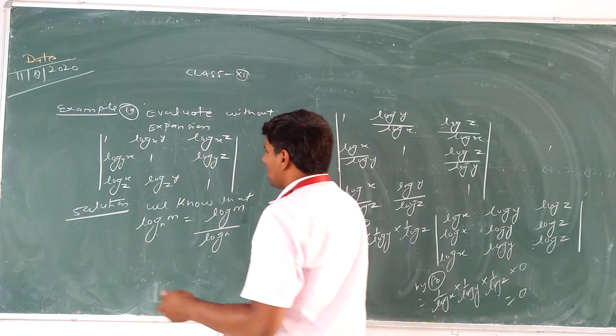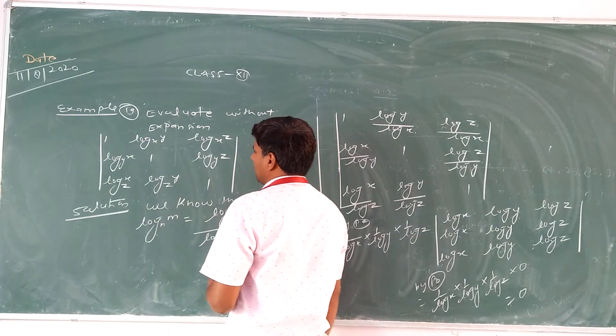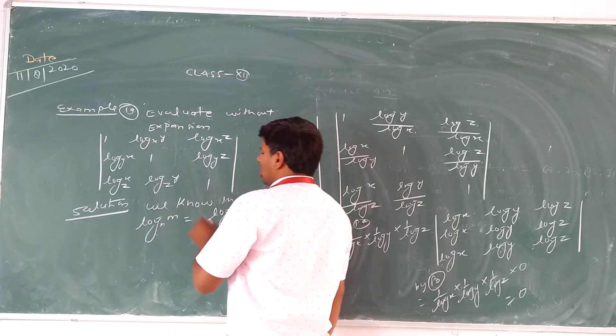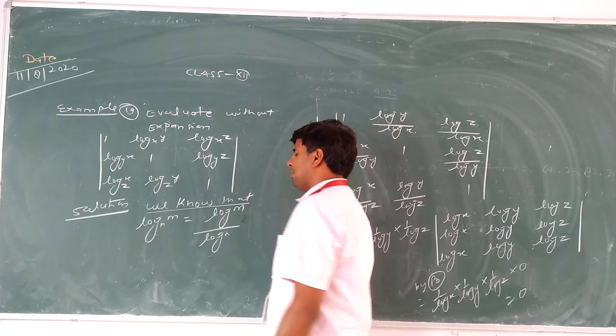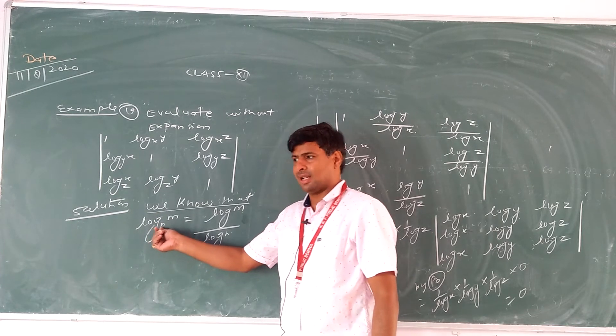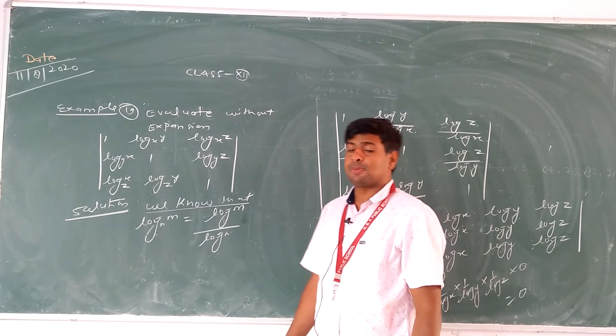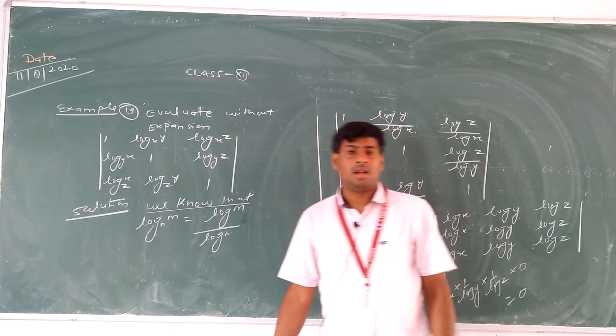This is the one: log y by x, log z by x, log x by y. So you know that by using logarithm rules, that is log m by n, we can write as log m by log n. This is a particular rule of logarithm.